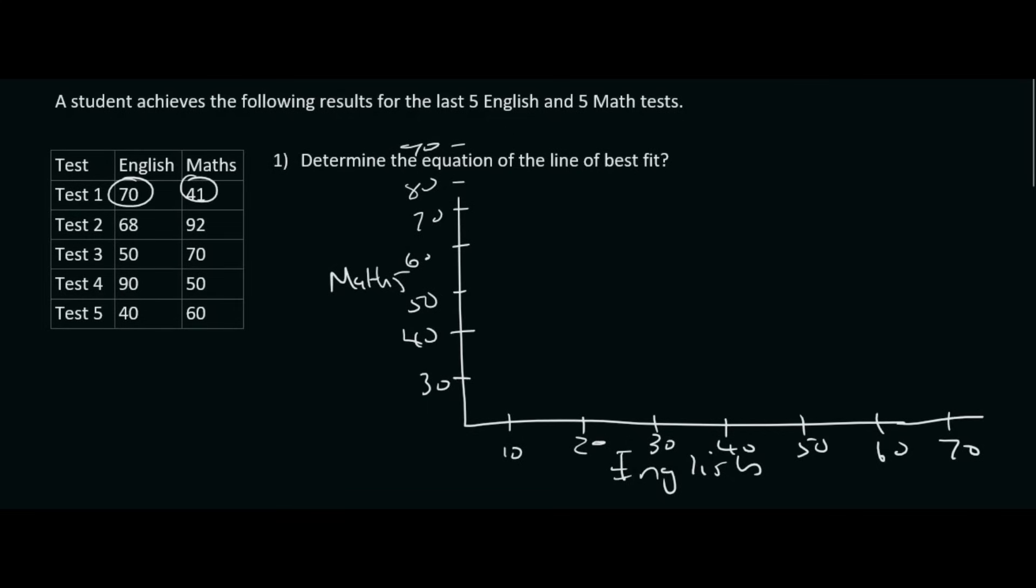But then you'd go plot the values. So this one would be 70 and 41. So 70 for the English, 41 for the maths. The next one would be 68 and 92, 68 and 92, something like that.